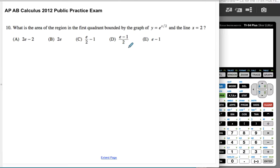What is the area of the region in the first quadrant bounded by this graph and the line x equals 2? Alright, so in the first quadrant,